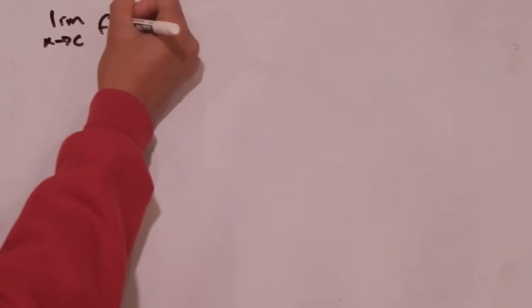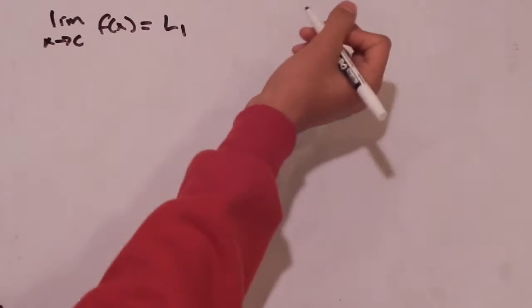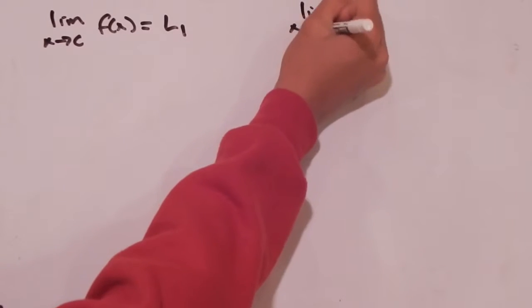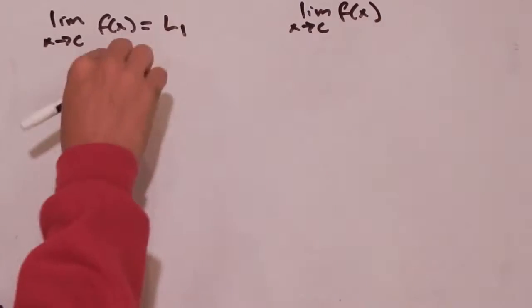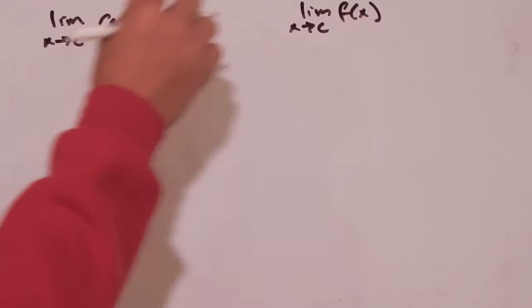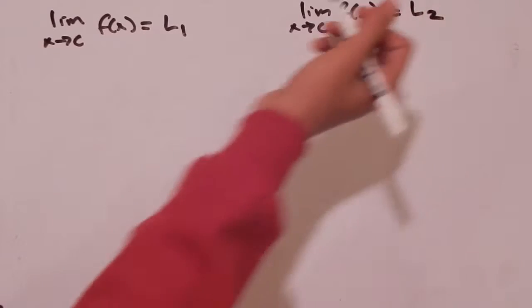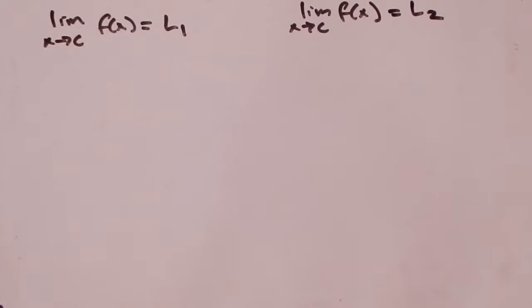What I'm trying to show is that if I have the limit as x approaches c of f of x, and I say that this limit is equal to L sub 1, and I have the limit as x approaches c of f of x again — notice that these are the two exact same functions approaching the same c value — and I say this equals L2, I'm going to try and show you that L1 has to equal L2. There can only be one value for the limit.